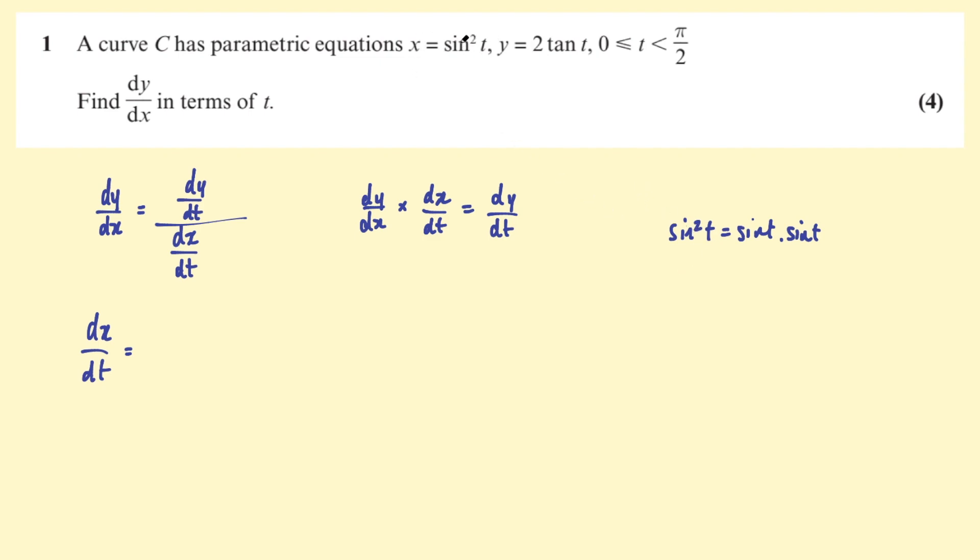So the chain rule says we want the derivative of the function inside the square, if you like. So you can also think of this as sine t squared. So the derivative of the function inside the brackets first.